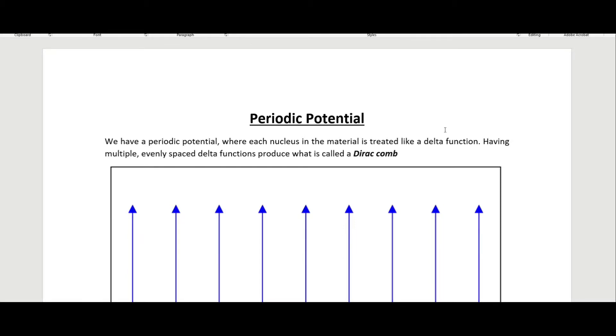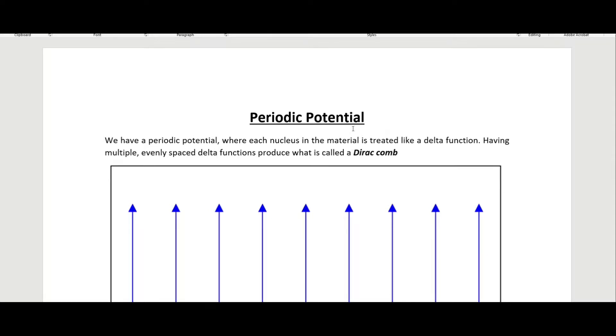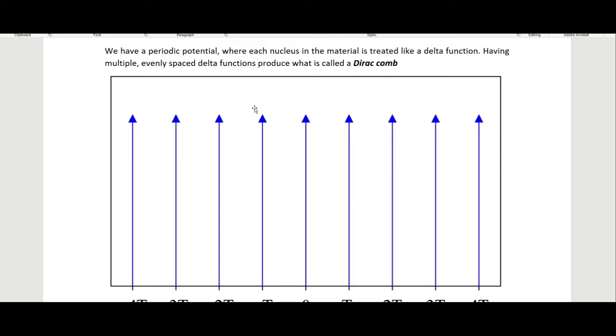In this video I'm going to talk about periodic potentials, and in particular a periodic potential where the potentials are delta functions. This is called a Dirac comb — it looks like a comb with delta functions where there is a potential, and between these delta functions there is zero potential, so it's just these quick spikes of potential.